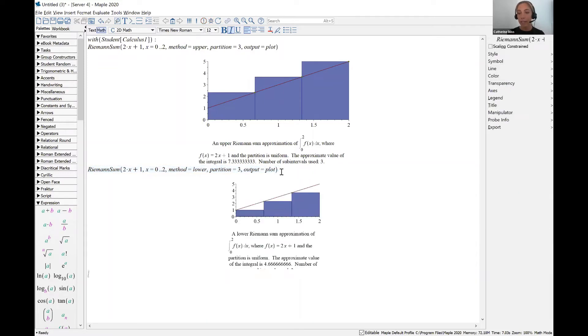Okay, so here we're using left-hand endpoints. This is a lower sum, and this turned out to be 4.6 repeating.